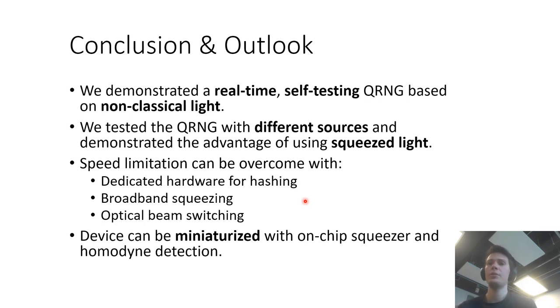Now in our case the squeezed light was generated using an OPA cavity which meant our ultimate speed of the QRNG was going to be limited by the cavity bandwidth. So speed was not our main concern and we are limited to rates around tens of kilobits per second. However this speed limitation can be overcome by using dedicated hardware for hashing which we didn't.